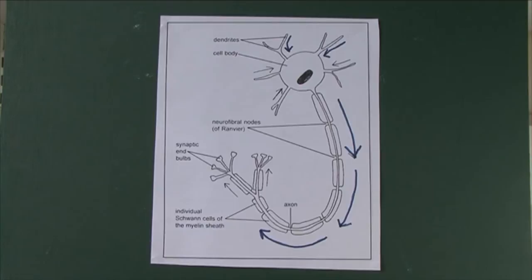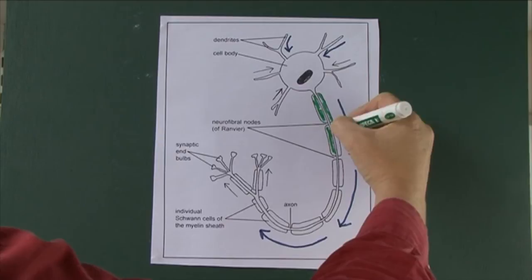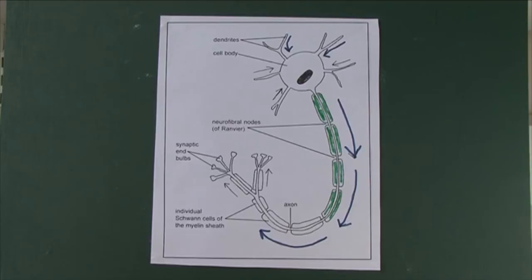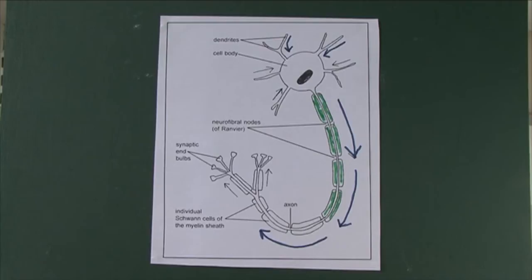Here we see the cell body with the nucleus, and surrounding the axon we can clearly see the myelin sheath. In the peripheral nervous system the myelin sheath is made up of Schwann cells — one of the relatively rare cases in anatomy and histology where we use the names of the original discoverer. The Schwann cells make up the fatty myelin sheath which insulates, protects and nourishes the nerve fiber.